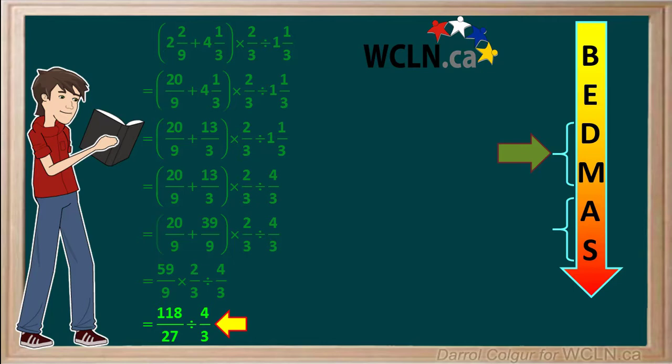So the question now becomes 118 over 27 divided by 4 thirds. Dividing by a fraction is the same as multiplying by its reciprocal, so it's the same as 118 over 27 times 3 over 4.